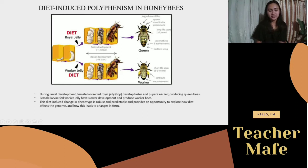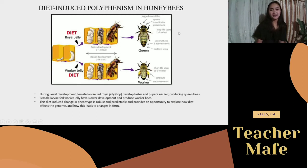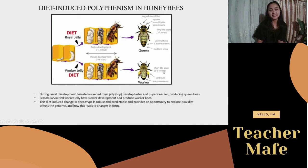As you can observe, queen bees and workers have different characteristics. The queen has large mandibles, a longer lifespan, a longer abdomen because it contains the spermatheca where the queen stores sperm, and active ovaries — since the queen bee is the only one that reproduces. The worker bee has a short lifespan of only 3 to 6 weeks and has active ovaries.